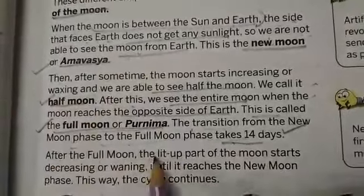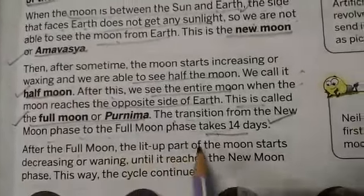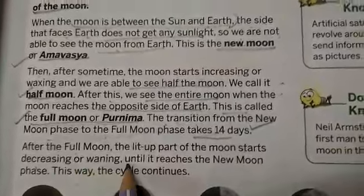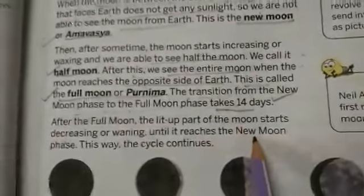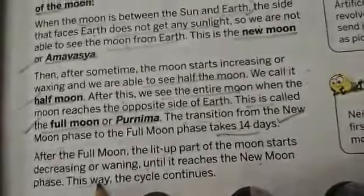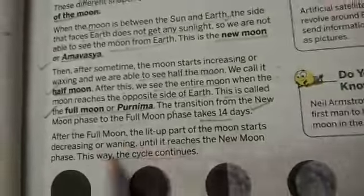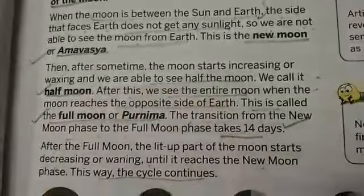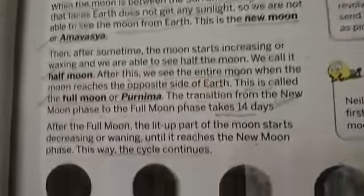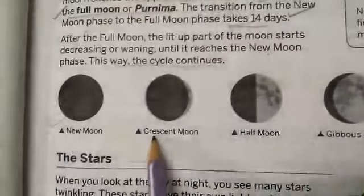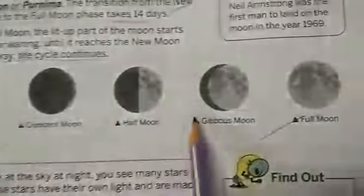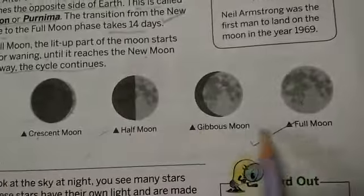After the full moon, the lit part of the moon starts decreasing or waning until it reaches the new moon phase again. This way the cycle continues. The phases are: new moon, crescent moon, half moon, gibbous moon, and full moon.